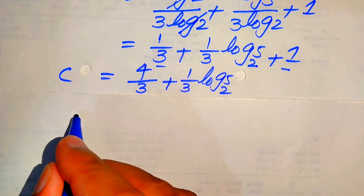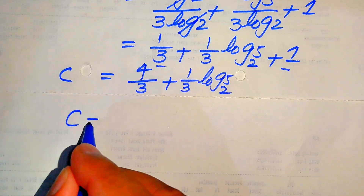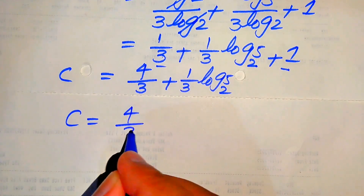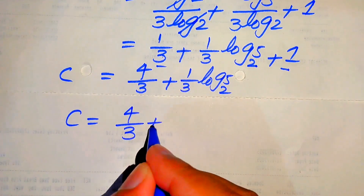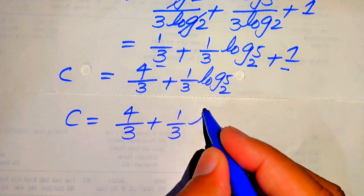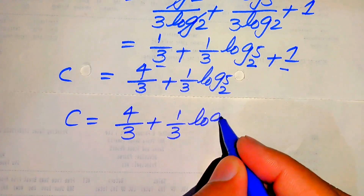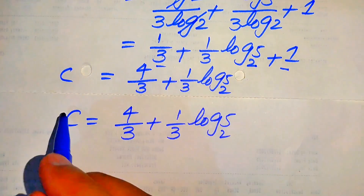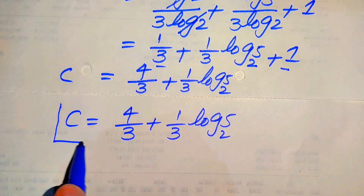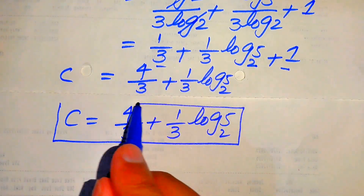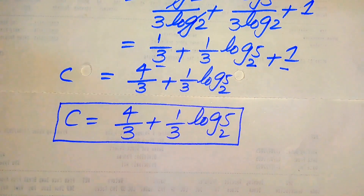Taking the LCM of 1/3 and 1, we get the value of C equals 4 over 3 plus 1 over 3 times log 5 with base 2. This is the final value of C for the given equation.